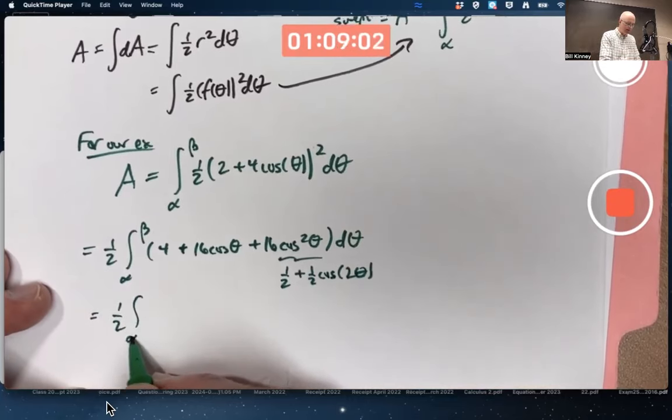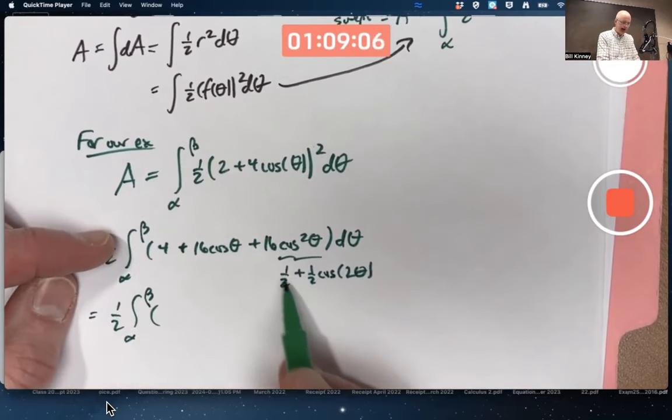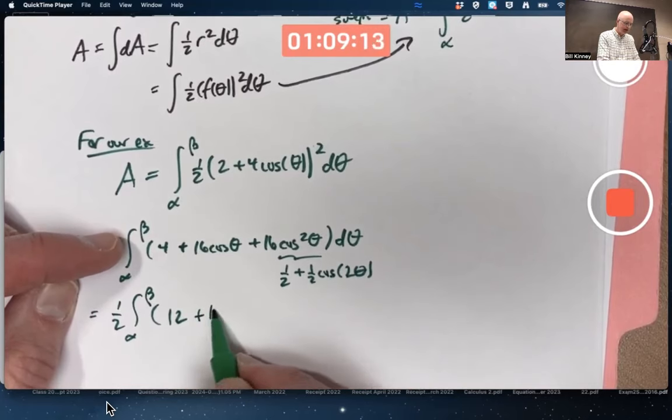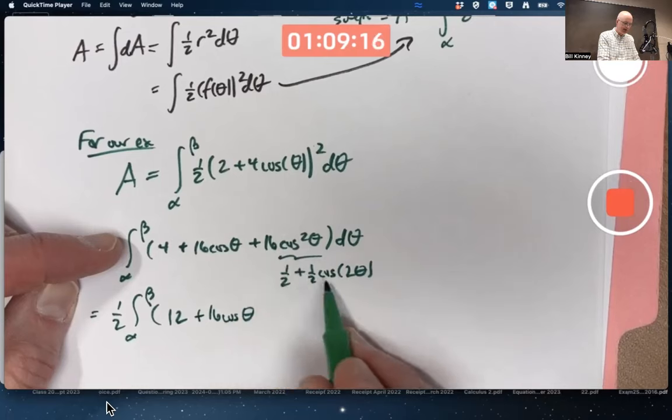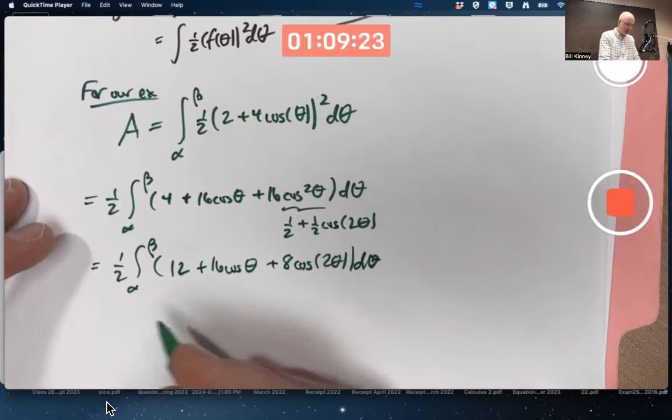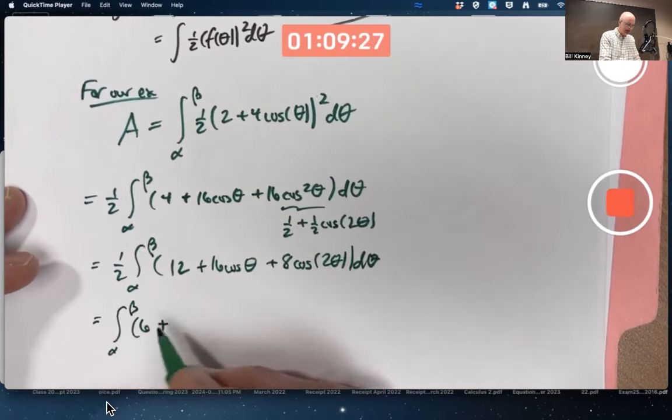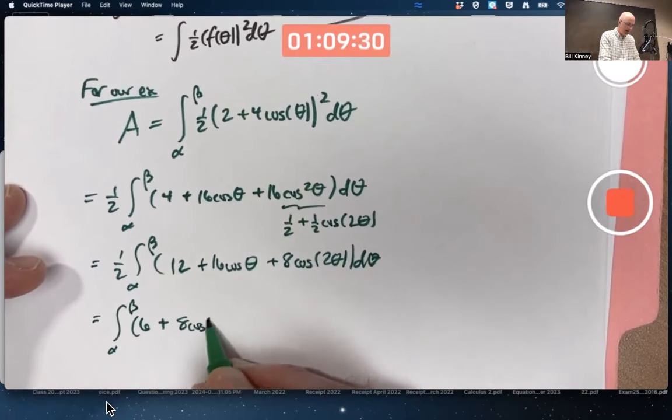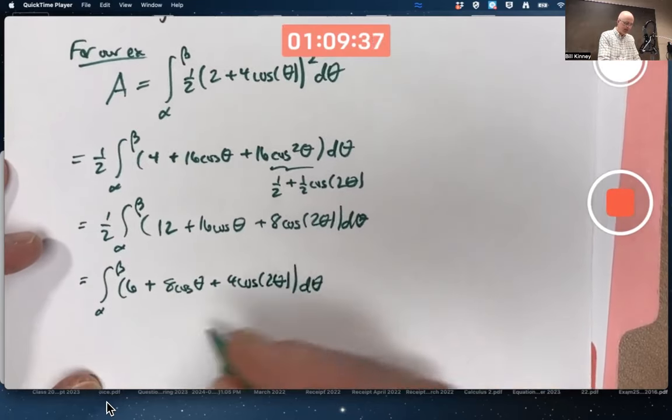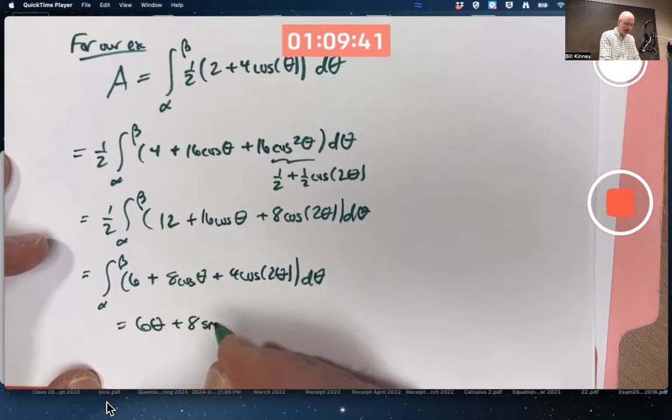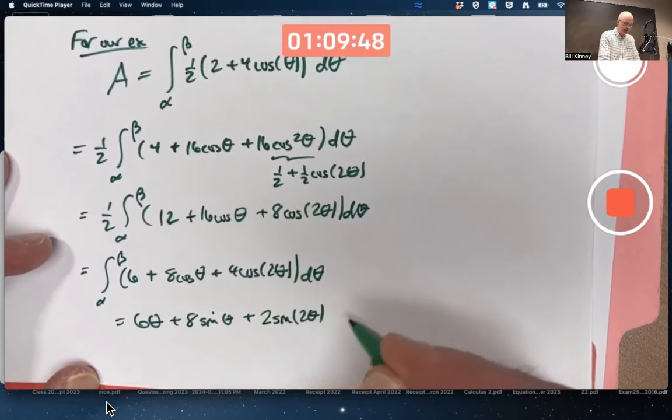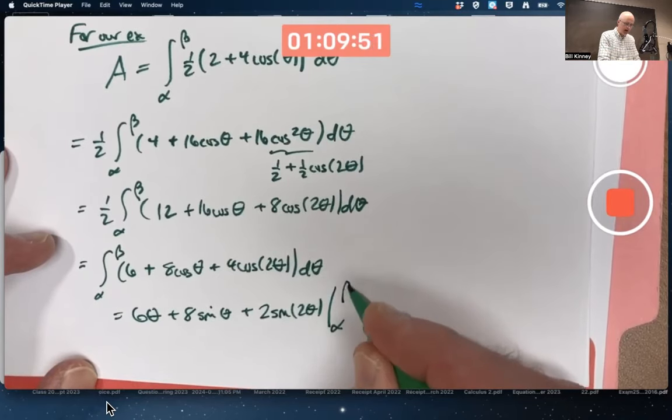Use our famous identity that cos squared theta is one half plus one half cos two theta to help simplify. One half times the integral from alpha to beta. Let's see, 16 times a half is eight, four plus eight is 12. Then we also have plus the 16 cos theta, and we also have 16 times a half is eight plus eight cos two theta. Maybe you want to bring the one half back through, so we are ultimately integrating from alpha to beta six plus eight cos theta plus four cos two theta. Which can be pretty easily done. Six theta plus eight sin theta plus it'll be two sin two theta. Check that by differentiation. You evaluate it from alpha to beta, whatever that ends up equal.